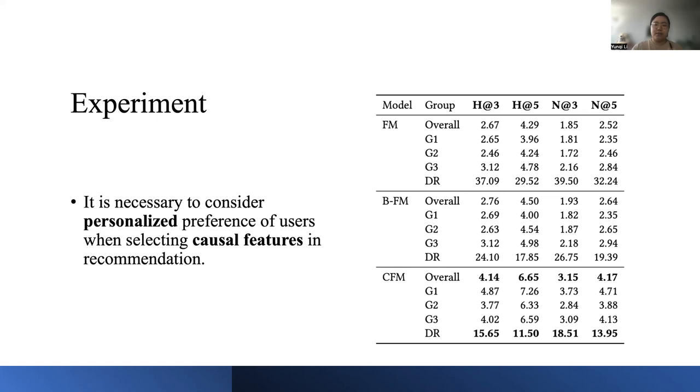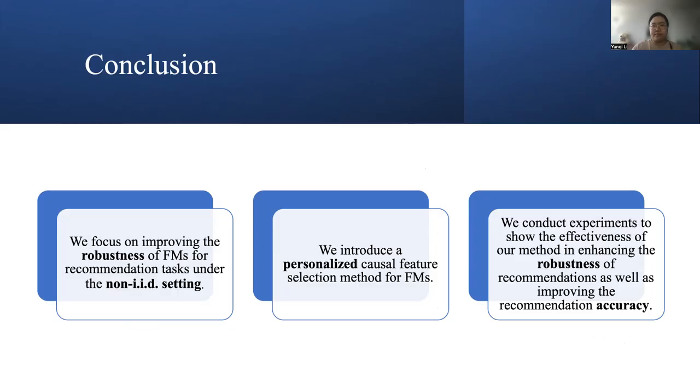We can see that by comparing the results in this table, the CFM model achieves the best overall performance and robustness. It shows that forcefully selecting global causal features will not help to improve the performance, since the learned model is not suitable for any user, but just trying to accommodate the majority. Therefore, it is necessary to consider the personalized preference of users when selecting causal features in recommendations.